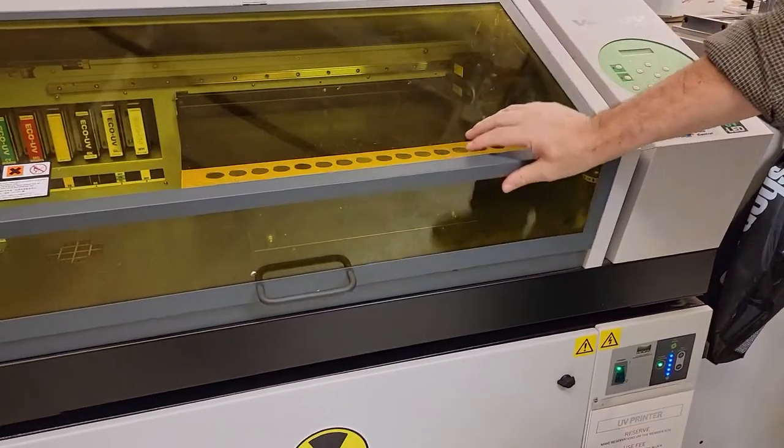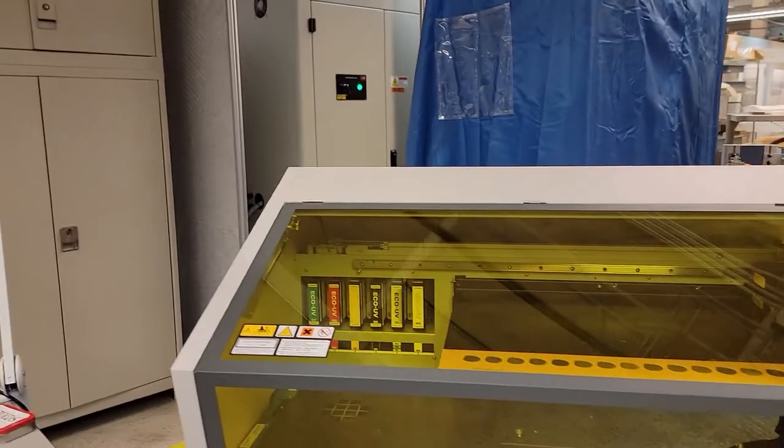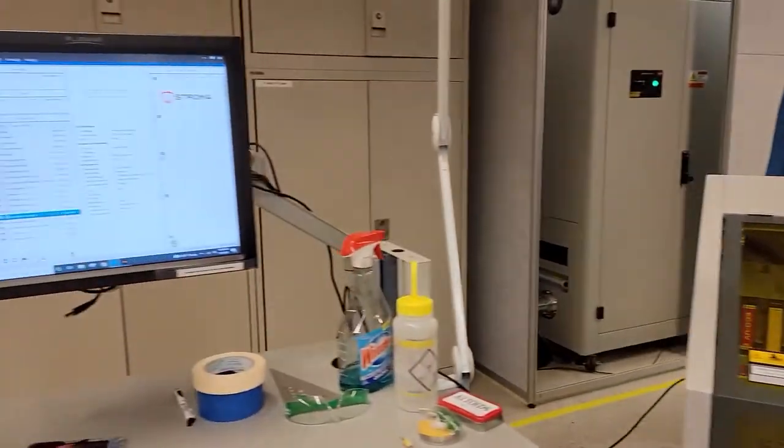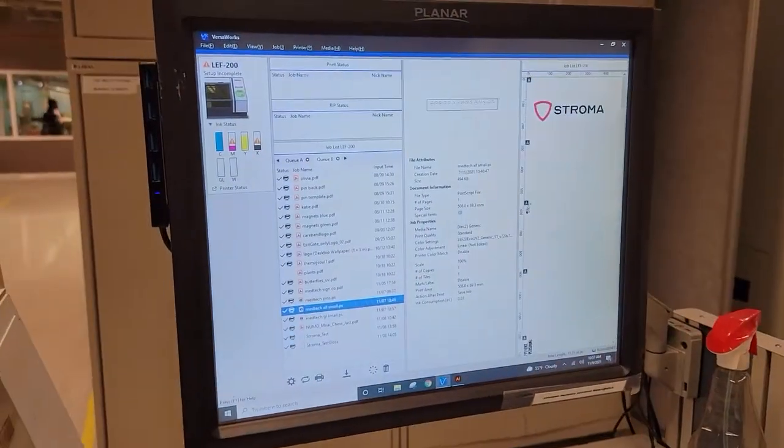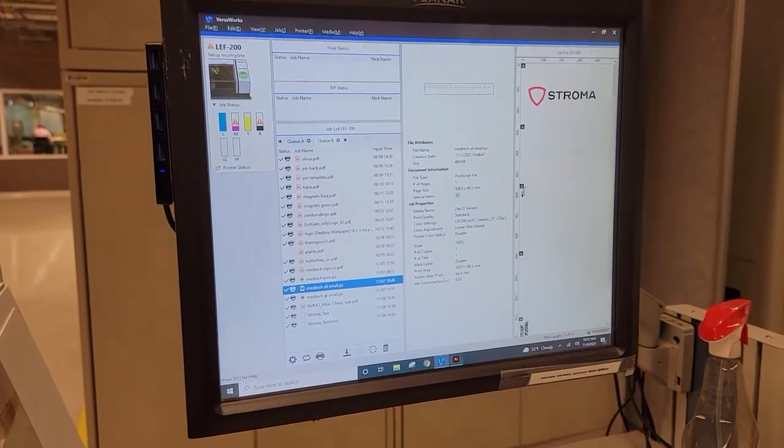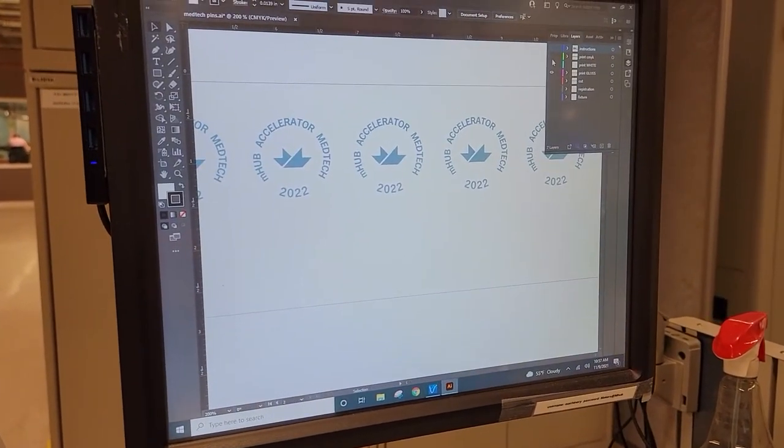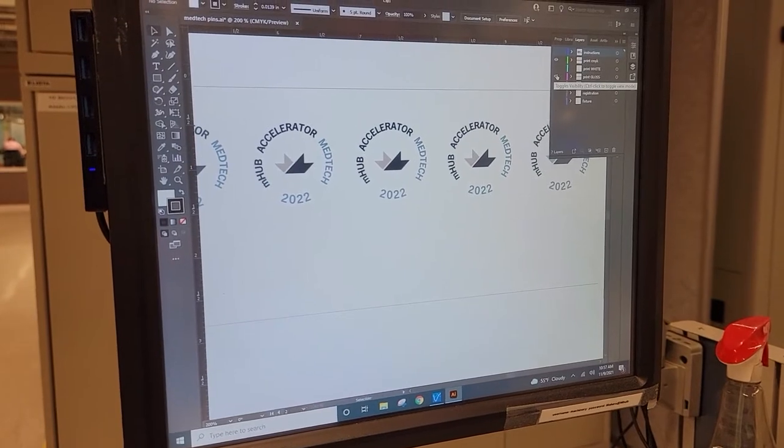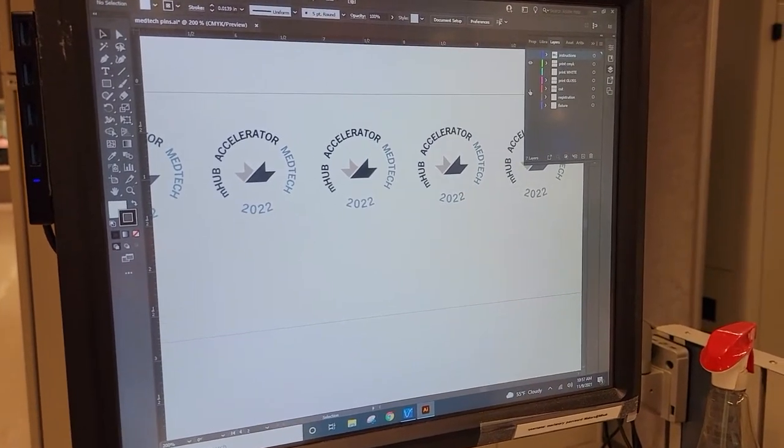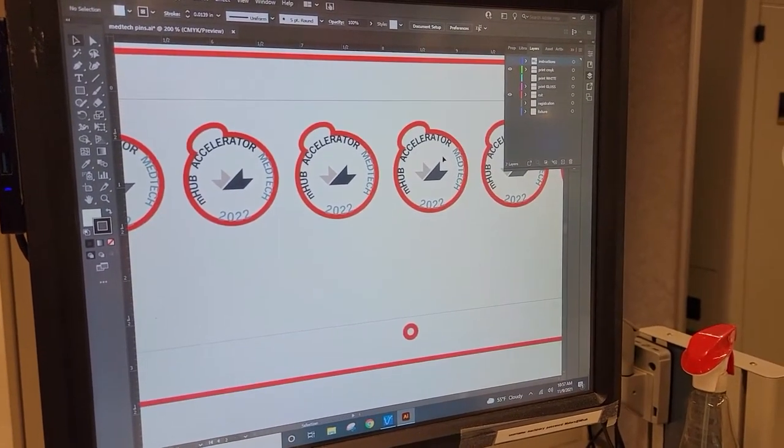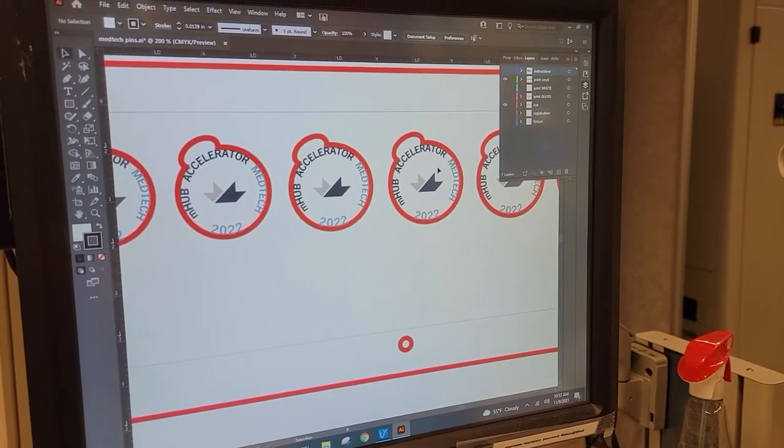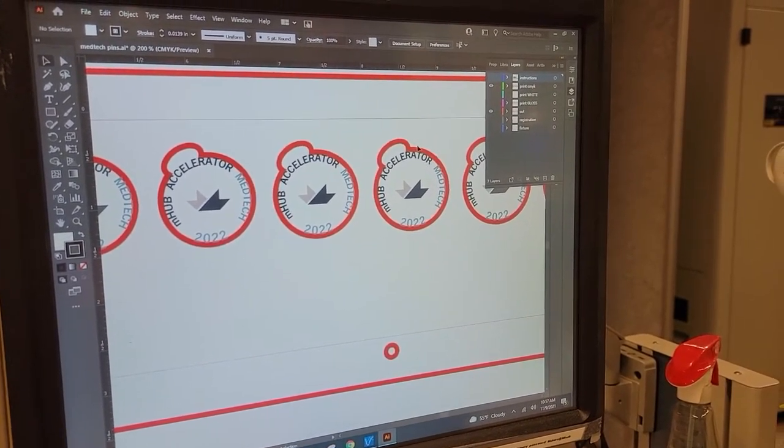Let's look at what that file looks like over on the computer here. We started in Illustrator. We had a regular CMYK design for the pins. We have a layer that had the cut lines that we used both for running the fiber laser and then for making that acrylic jig that helped us position it accurately in the UV printer.